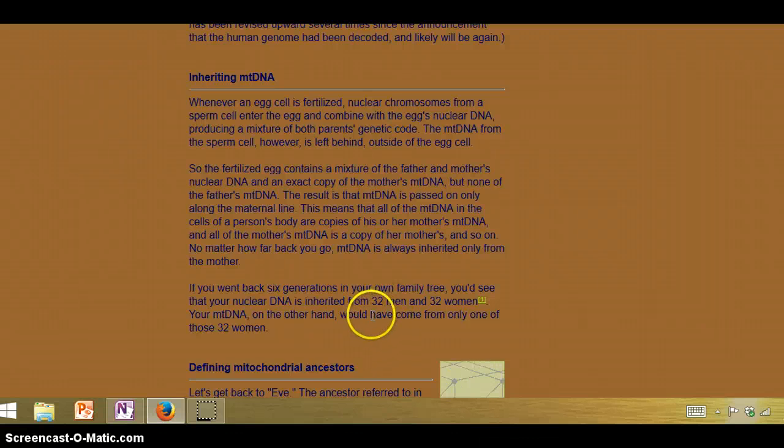Whereas if you looked at the nuclear DNA, it's basically coming from 32 men and 32 women, so trying to figure out ancestry can be rather difficult when doing that. The mitochondrial DNA kind of simplifies the situation.